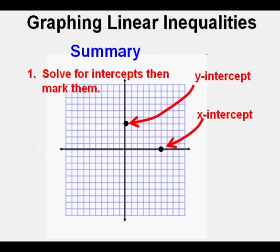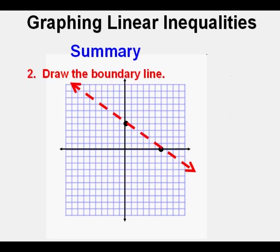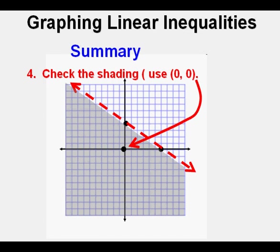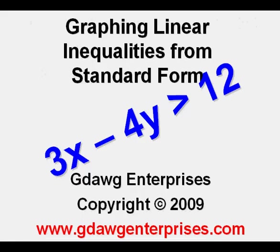To summarize: first, find the x and y-intercepts by covering the y and x terms respectively, then solve for each intercept and mark them. Draw the boundary line — dashed for strictly less than or greater than, and solid for less than or equal to or greater than or equal to. Shade above for greater than and below for less than. Finally, use a point like (0, 0) to check if the correct area was shaded, since the calculations are really easy. This has been graphing linear inequalities from Standard Form. Thanks for viewing.